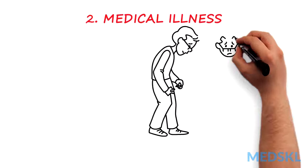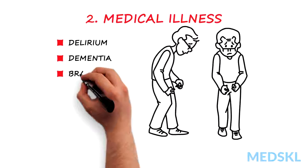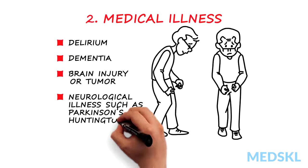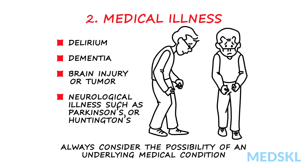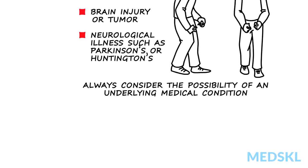The second is medical illness. A variety of medical conditions can present with or be complicated by psychosis. Examples include delirium, dementia, a brain injury or tumor, and other neurological illnesses such as Parkinson's or Huntington's disease. You should always consider the possibility of an underlying medical condition, especially when there are abnormal physical exam or laboratory findings.